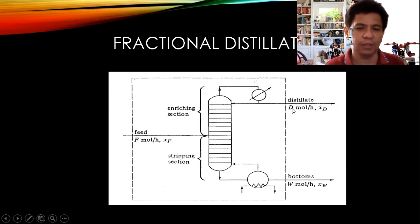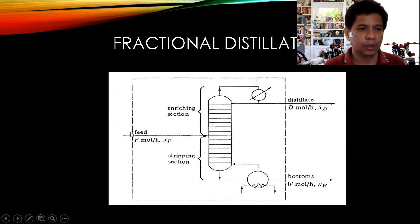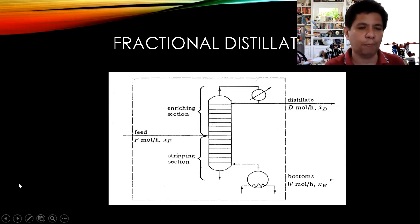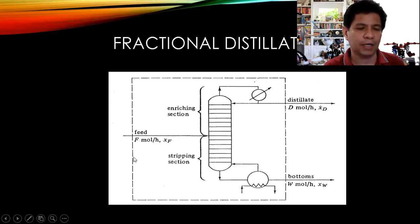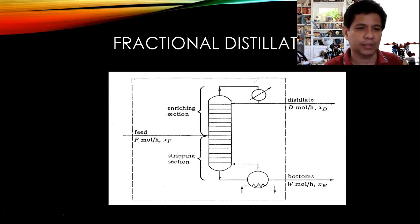xf is the concentration of the feed, xd is the concentration in the distillate, and xw is the concentration in the bottoms — all with respect to the more volatile component. In this tutorial we will derive the equations used for the graphical solution of fractional distillation: the McCabe-Thiele method. We will derive the general equation and the shortcut equation, and also cover numerical calculations tested on board exams — such as the y-intercept and slope of the rectifying line, and the quality of the feed.